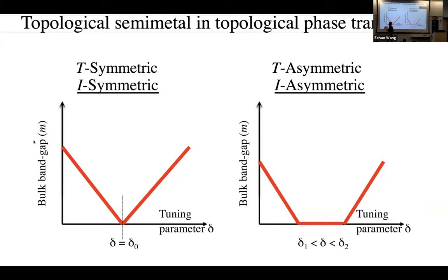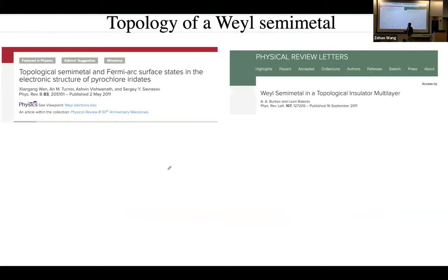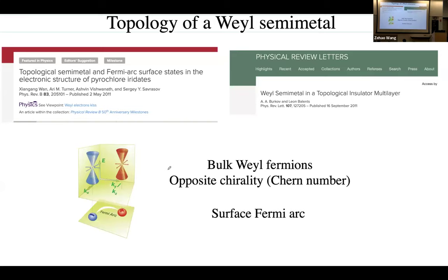If you preserve both time-reversal and inversion symmetry, bands just touch at a single point as you vary a parameter and then leave. But if you break either symmetry, the bands touch and form Weyl points over an extended parameter range — an intermediate phase, as shown by Murakami. The topology was then more extensively studied by Ashvin and Vishwanath, and also by Anton and Leon Balents in seminal theory papers. Weyl semimetals have gapless Weyl crossings in the bulk and Fermi arc surface states. The Weyl fermions come in pairs with opposite chirality and opposite Chern number.